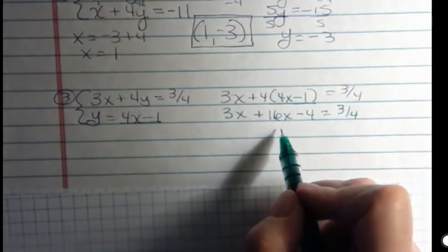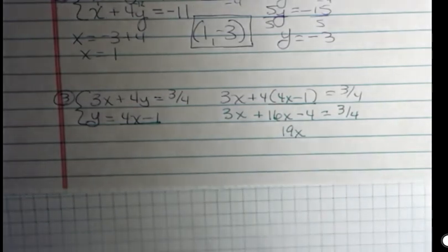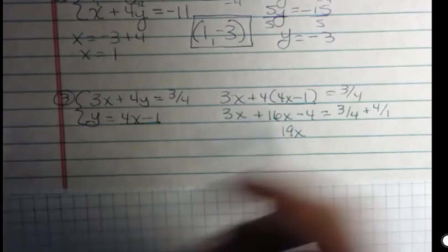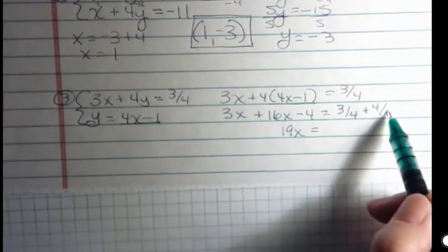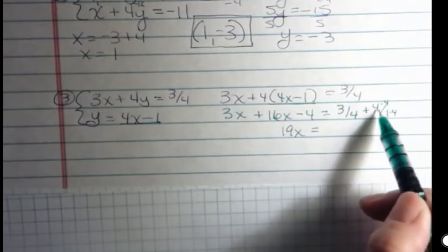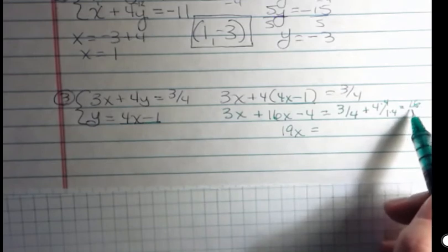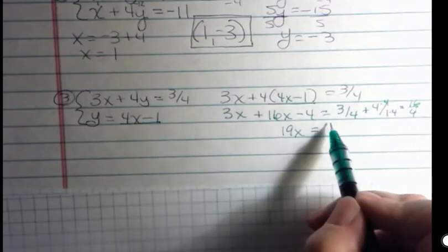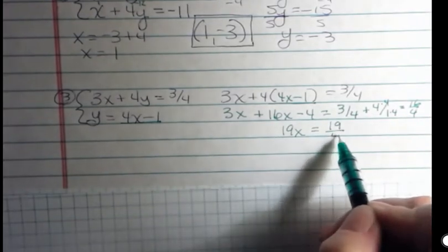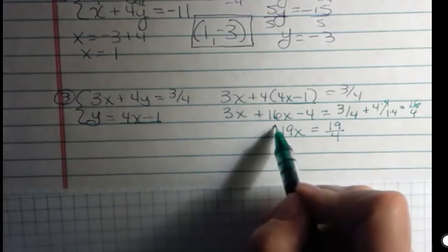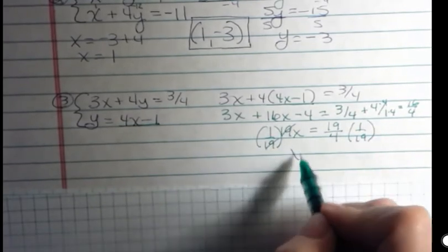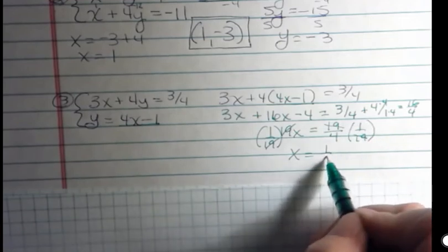So what I have is 3x plus 16x minus 4 equals 3 4s. That's 19x. Yikes. Yikes. Is that right? 3 4s plus 4. I'm going to say 3 4s plus 4 over 1 equals, well, when I have 4 over 1, I can multiply by 4, and that gives me 16 over 4, right? So I have 16 4s. 4 over 1 is 16 over 4, plus 3 more is 19 over 4. Well, that's not too bad because now if I multiply both sides by 1 19th, then I can see that the 19s go away, and I get 1 4th over here.